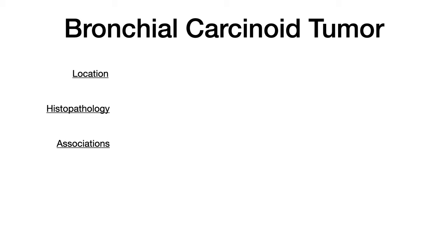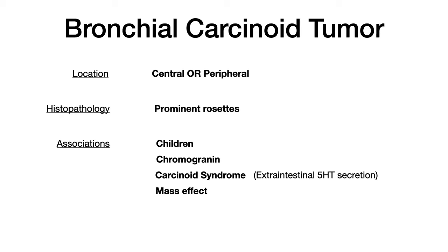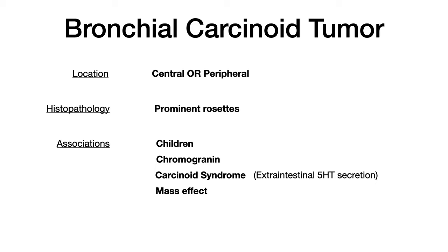Now let's talk about bronchial carcinoid tumor. These can be central or peripheral, and test writers really aren't going to ask you which — with small cell, maybe they'll want you to know it's central, but for bronchial carcinoid, they're not going to care. The histopathology here is that you'll see prominent rosettes. This is associated more so with children, and also associated with chromogranin, but the big thing here is the carcinoid syndrome that this bronchial carcinoid tumor creates.